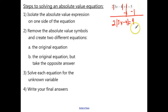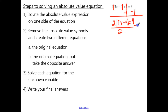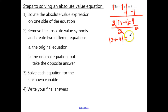We need the absolute value symbol and what's inside by itself — we have a 2 multiplied by it, so we want to divide by 2 on both sides to cancel out that 2. Then we'll be left with the absolute value of 3x minus 4, and 4 divided by 2 gives us 2. That was step number 1.